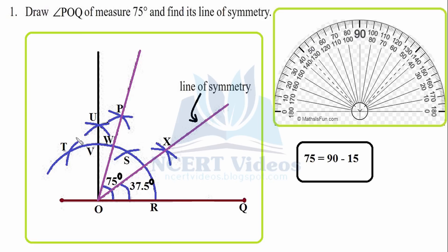This means we have constructed 60 degrees and another 60 degrees, giving 120 degrees total. What lies between 60 degrees and 120 degrees will be 90 degrees. With the same radius, cut at U and similarly from S as well — this is the point where you get 90 degrees.